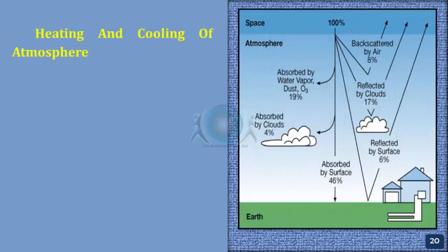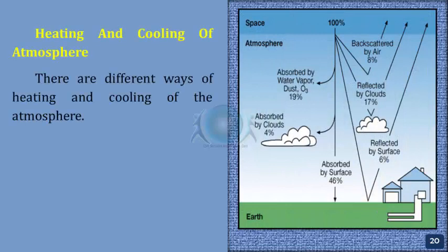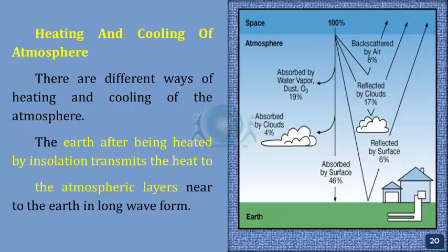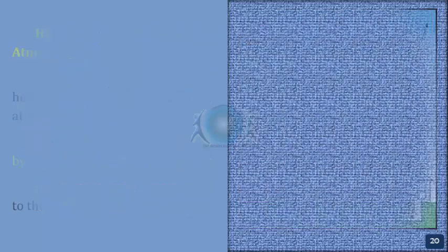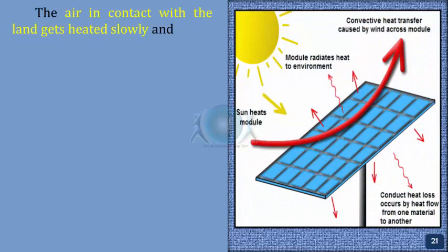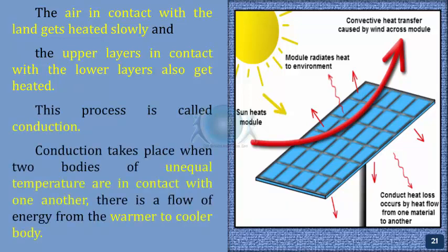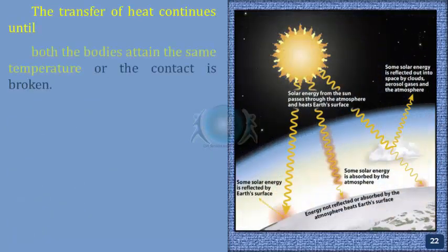Heating and cooling of the atmosphere. There are different ways of heating and cooling of the atmosphere. The Earth, after being heated by insolation, transmits heat to the atmospheric layers nearer to the Earth in long wave form. The air in contact with the land gets heated slowly and the upper layers in contact with the lower layers also get heated. This process is called conduction. Conduction takes place when two bodies of unequal temperature are in contact. There is a flow of energy from the warmer to the cooler body, continuing until both bodies attain the same temperature.